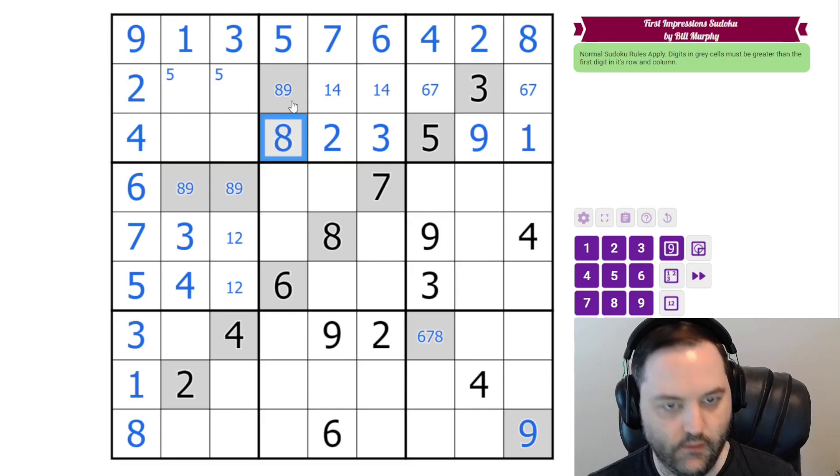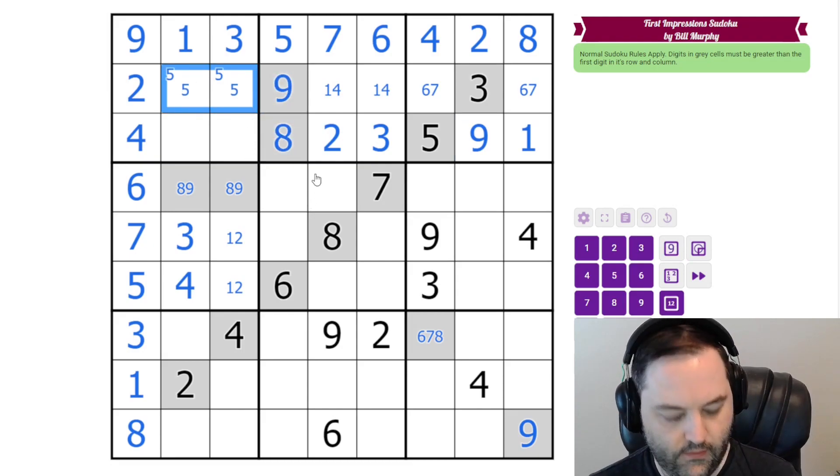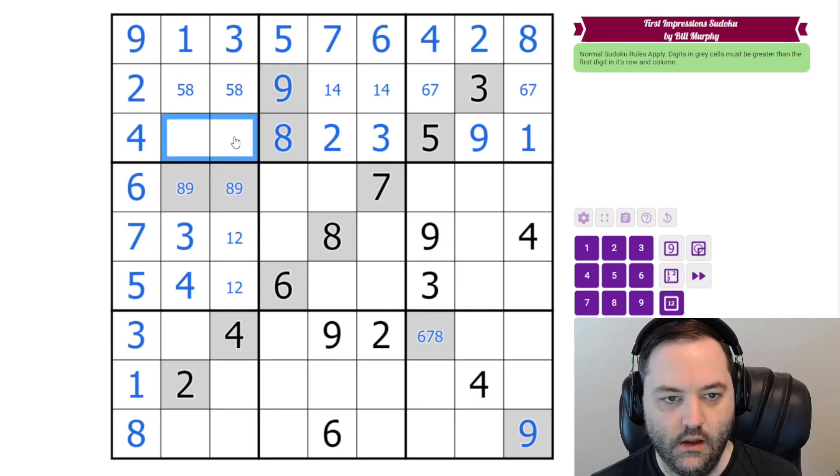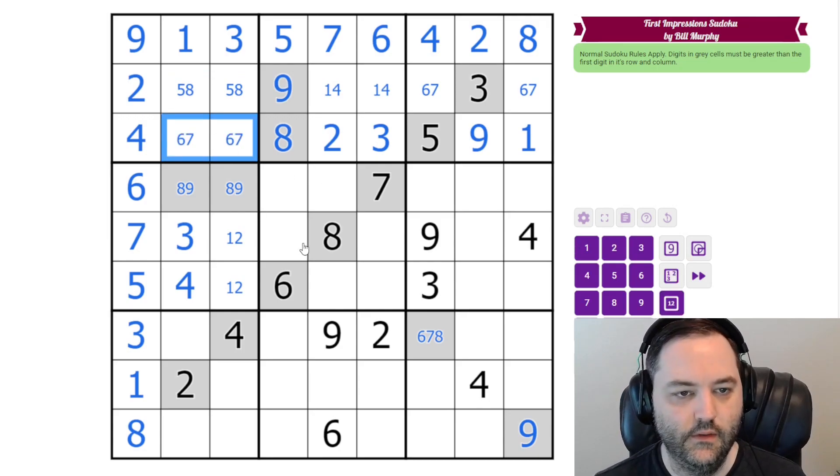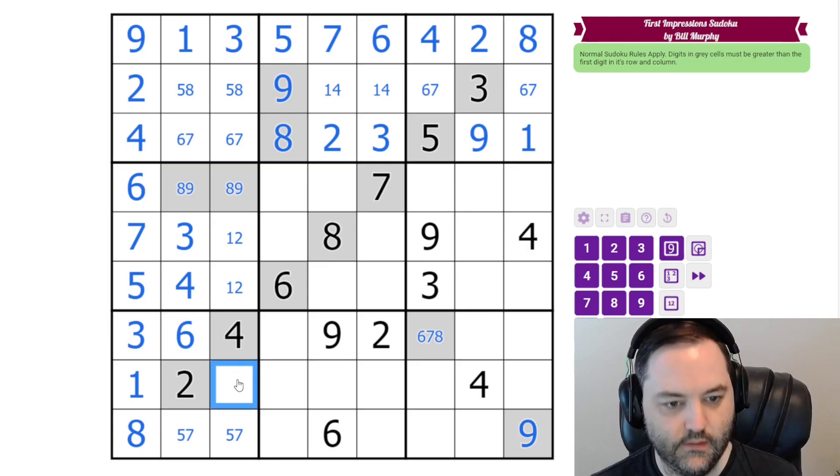The 9 here resolves 8 and 9. And now we are left with a 5, 8 pair in the row. And that means we are left with 6, 7 in this row. Down here, we have 5, 6, 7, and 9. These can't be 6 or 9, so they are 5 and 7. And these are 6 and 9, but we have a given 9. So this is 6 and 9.